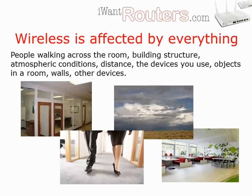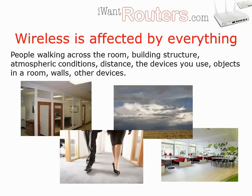Wireless technologies are affected by nearly everything. Many people have a mobile phone and mobile broadband these days, and you will know that when the signal is good everything works fine, and when it's not, the service can work one minute and not the next. Sometimes you have a good signal that all of a sudden turns into a bad signal — the same can be true with wireless networks. What does affect them? People walking across the room, building structure, atmospheric conditions, distances, the devices you use, objects in a room, walls and other devices. Rather than unpick all of these things, it's better to concentrate on building a robust network and tackling any areas that do cause a problem.